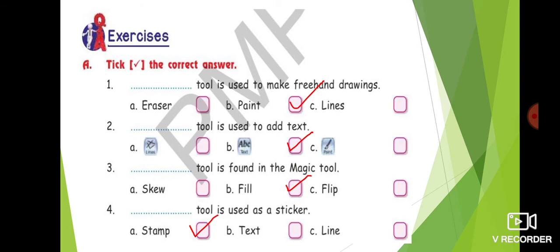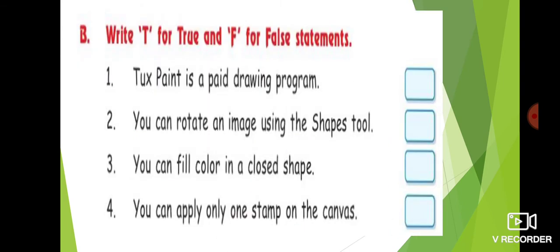Now we are going to do Exercise B — write T for true and F for false. True means the correct statement, and false means the wrong statement. If a statement is correct, write true; if it is wrong, write false. Let's see the questions first, then the answers.